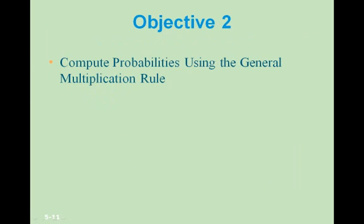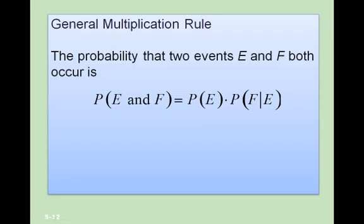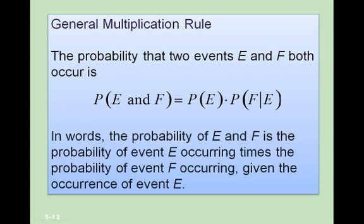Objective 2: compute probabilities using the general multiplication rule. The general multiplication rule says the probability that two events E and F both occur is given by this formula: the probability of E and F equals the probability of event E occurring times the probability of event F occurring given the occurrence of event E.